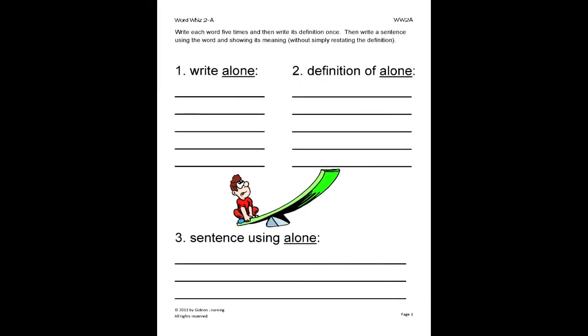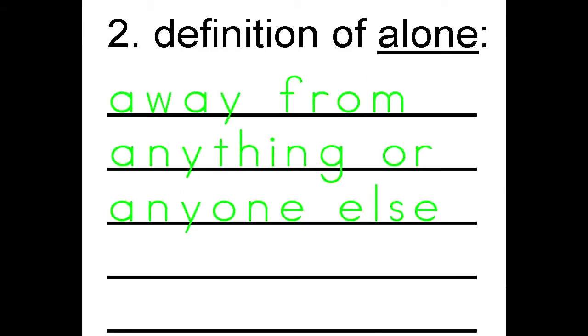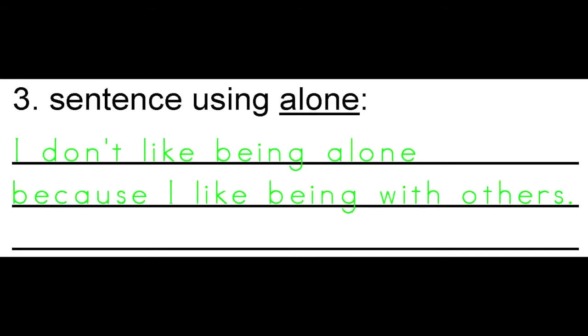On this exercise, the student will write each word five times and then write its definition once. Then, write a sentence using the word and showing its meaning. When writing a sentence, be sure to use your own words and creativity. Here is a good example. I don't like being alone because I like being with others.